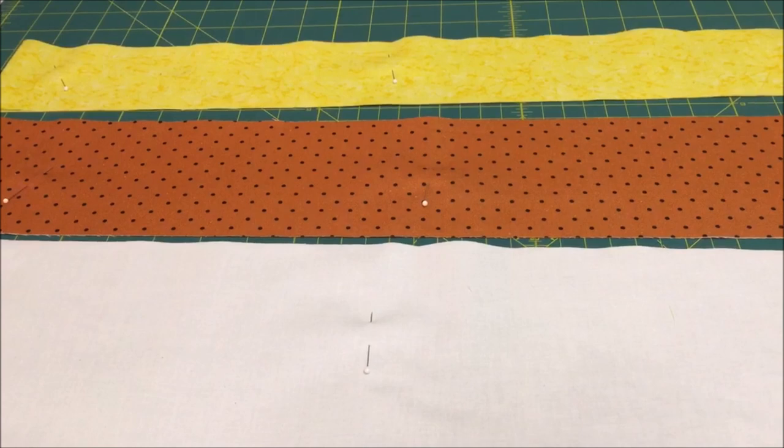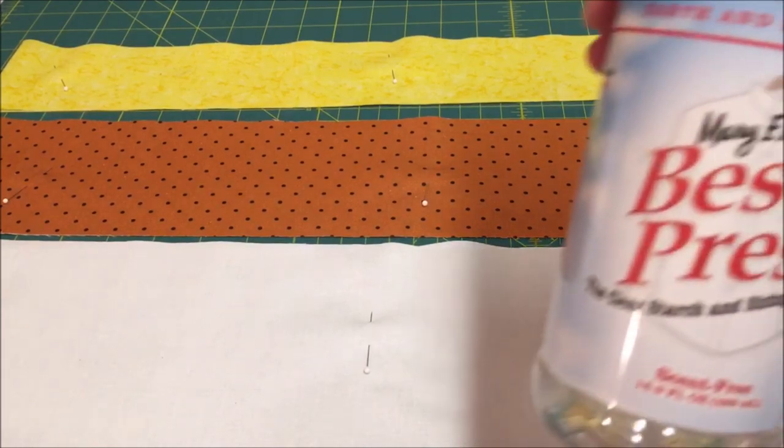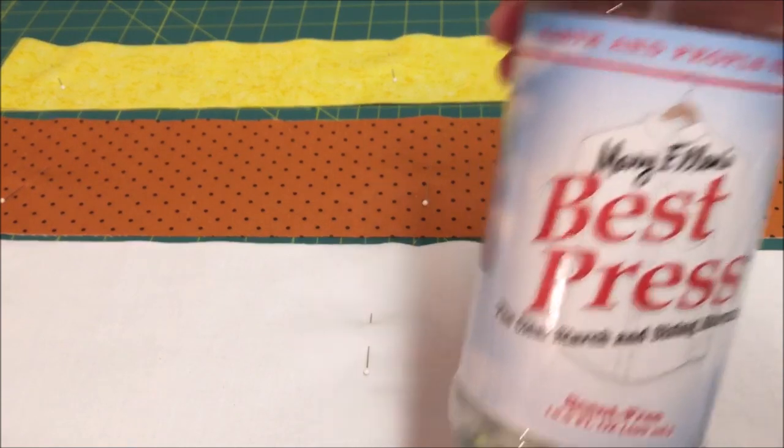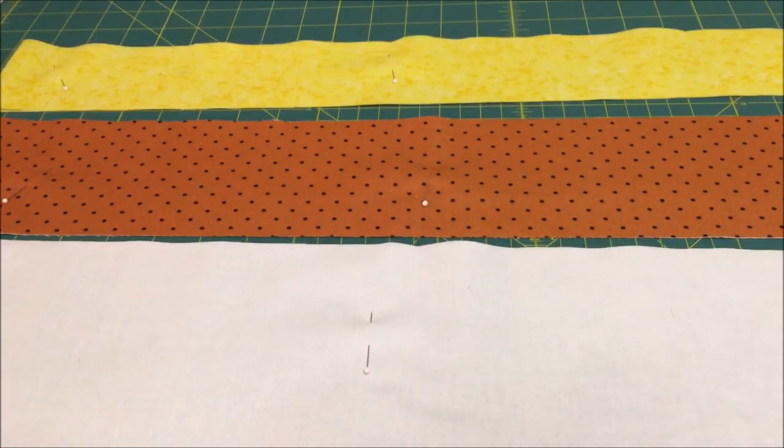To prepare the fabric for cutting, spray it with Best Press to give the fabric body and to iron out the wrinkles.